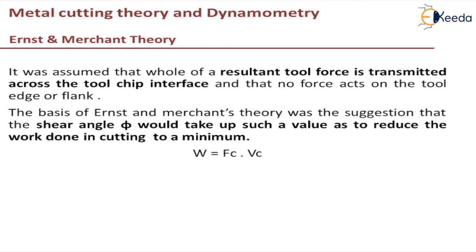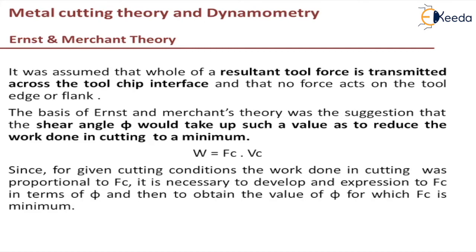We know that work done is the product of cutting force and velocity. In order to get the minimum work done, we need to get an expression for cutting force in terms of phi and then differentiate work done with respect to phi and equate it to zero so that we get a value of phi for which work done is minimum.